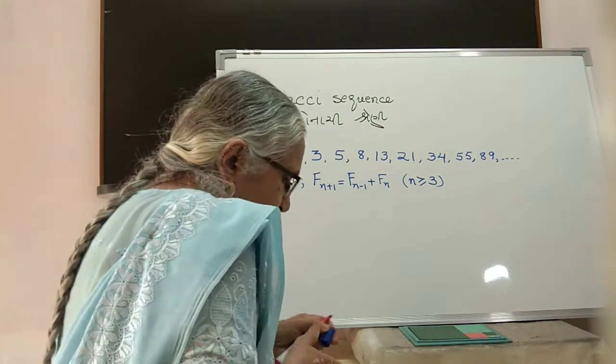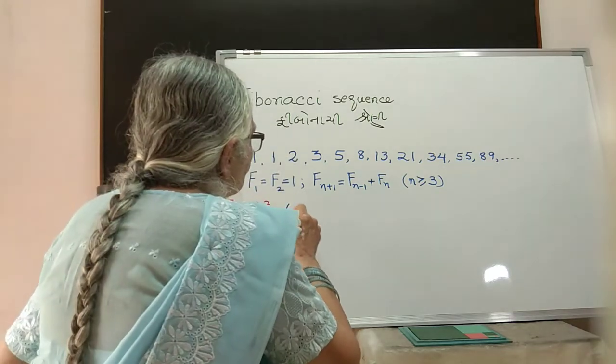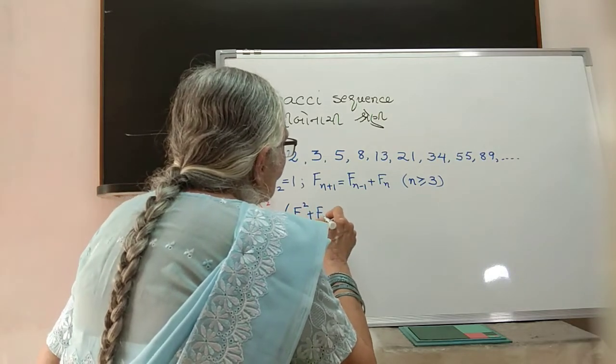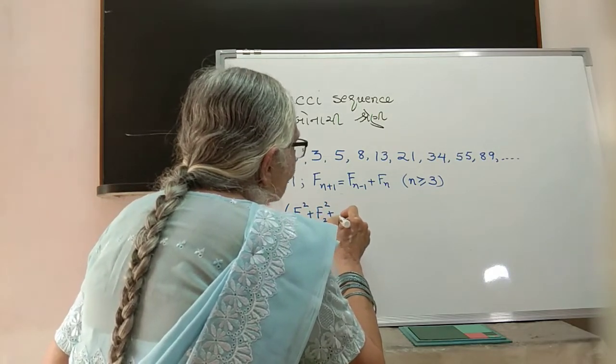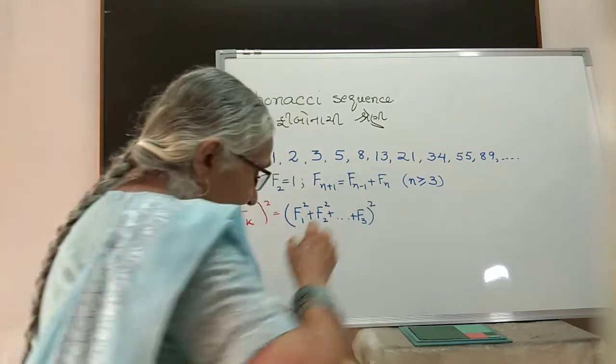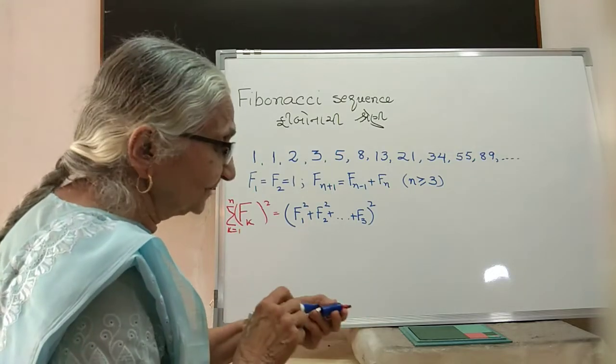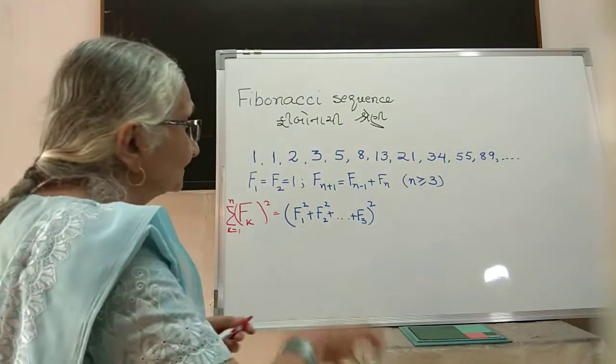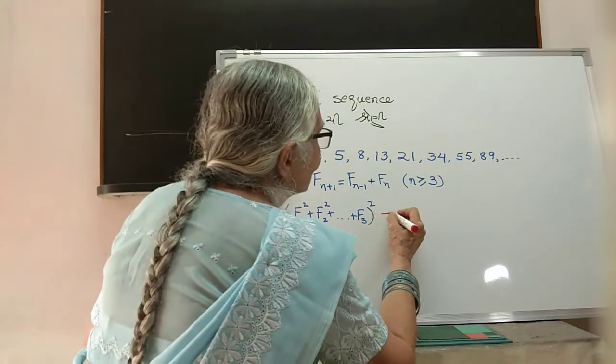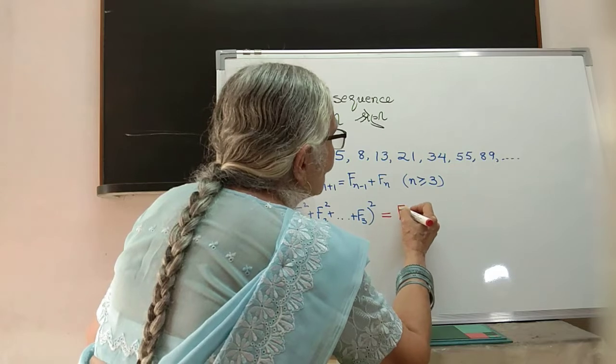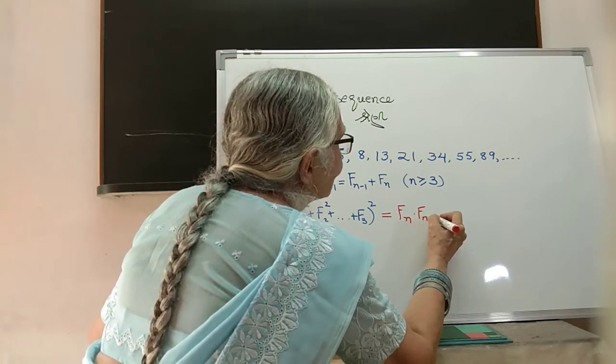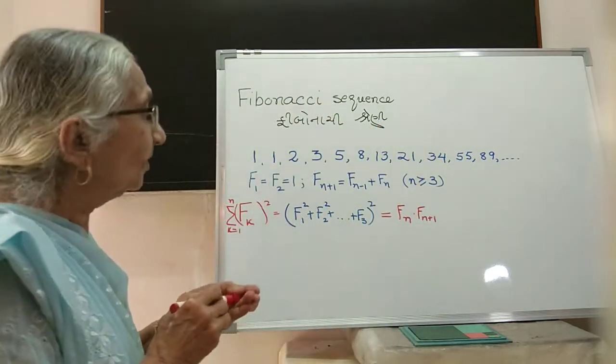What do we mean? You take k equals 1, so F1² plus F2² up to n. In other words, this means F1² plus F2² plus F3² and so on. The property is that this equals F_n times F_(n+1) of the Fibonacci sequence.